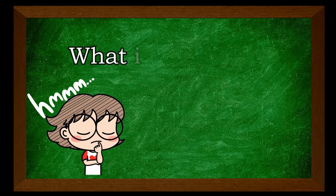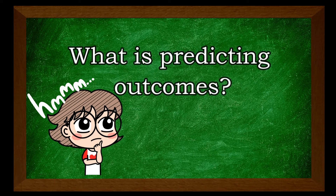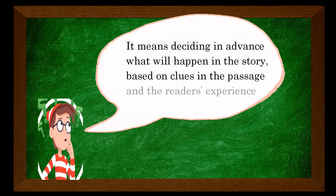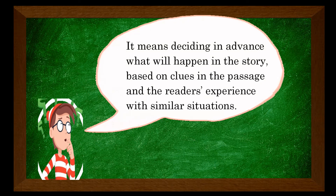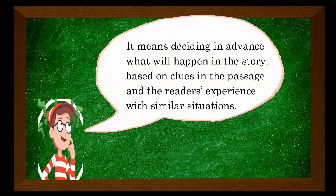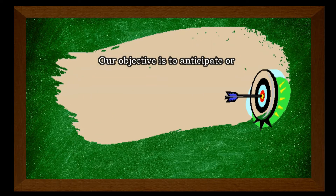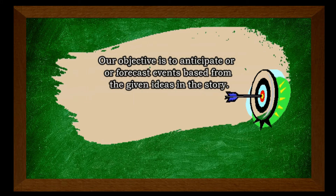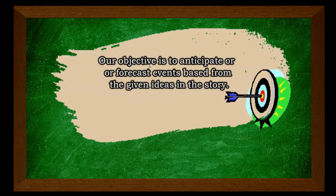As a Reading Comprehension Skill, what is Predicting Outcomes? It means deciding in advance what will happen in the story based on clues in the passage and the reader's experience with similar situations. Our objective is to anticipate or forecast events based from the given ideas in the story.